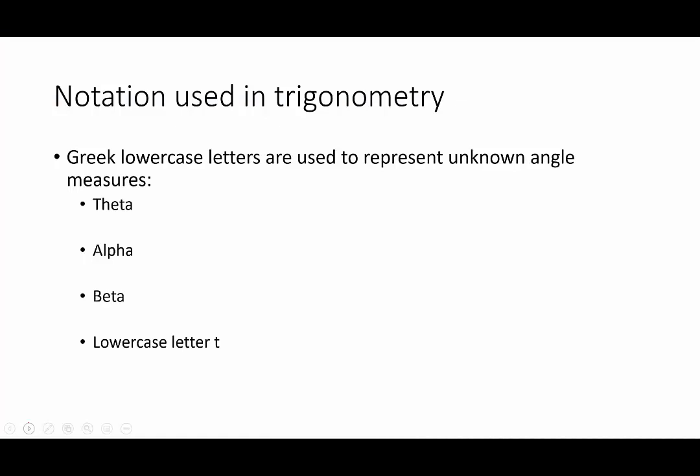Before we get into that, let's talk about some notation used in trigonometry. Very frequently, we use Greek lowercase letters to represent an unknown angle measure. Most commonly we use theta. Sometimes you might also see it written a slightly different way. Other letters used are alpha, which looks like a little fish or the letter A, and lowercase beta, which looks like an uppercase B with a little tail at the bottom. The standard letter T is also frequently used to represent unknown angle measures.